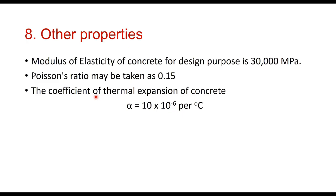Other properties of concrete required in design: modulus of elasticity taken as 30,000 MPa, Poisson's ratio 0.15, and coefficient of thermal expansion of concrete alpha = 10 × 10⁻⁶ per degree centigrade.